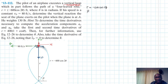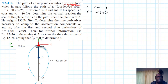So r dot, which is the derivative of r with respect to time, becomes minus 600 times 2 theta_dot times negative sine(2θ). Therefore r_dot is equal to 1200 theta_dot sine(2θ).